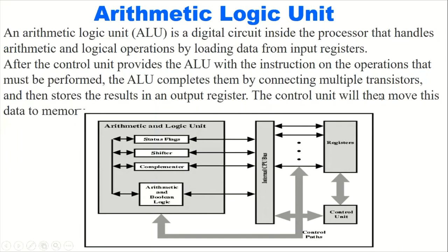The control unit then moves this data to memory. The ALU performs all arithmetic operations as well as logical operations, which are also called Boolean operations or Boolean logic. In this diagram we can see that the ALU performs different steps — there is a shifter, a status flag, a complementer, and an arithmetic logic area. Data is transferred towards the buses, stored into registers, and the control unit controls the overall operations.